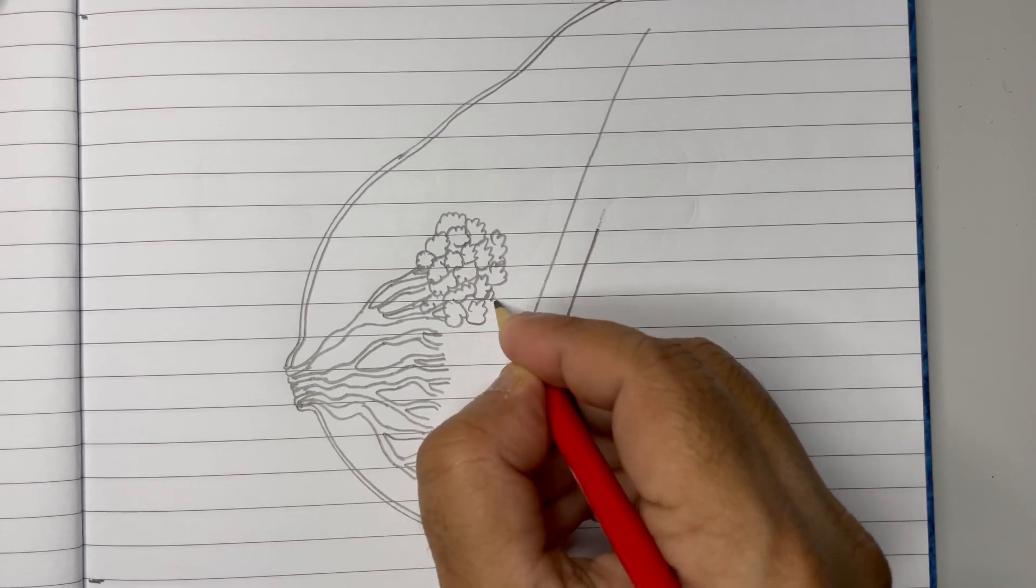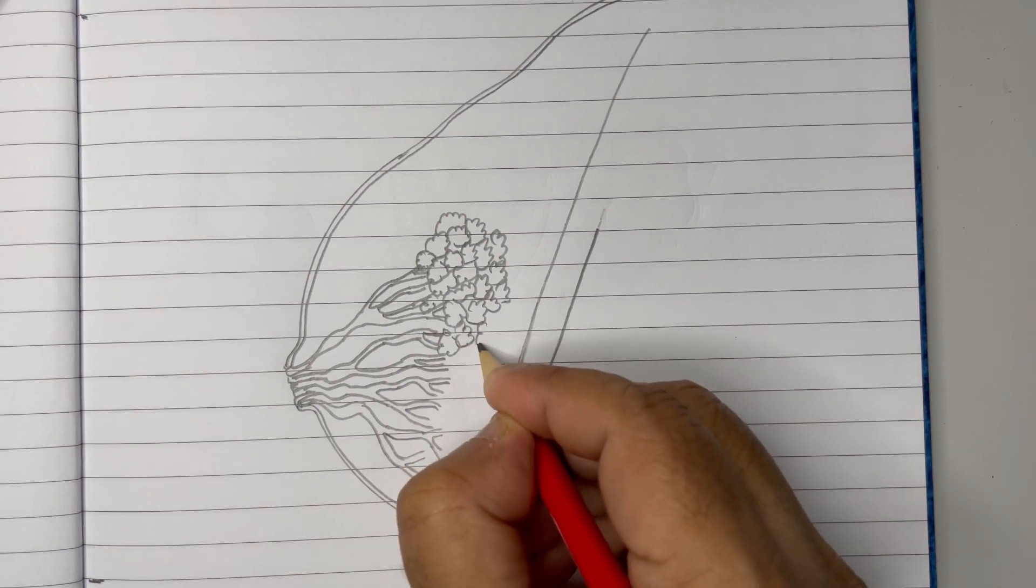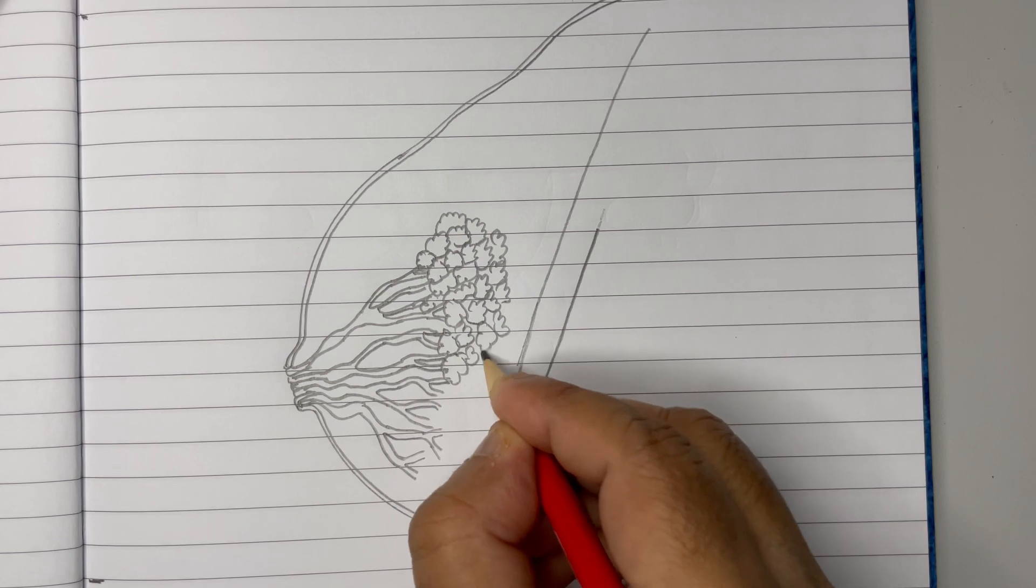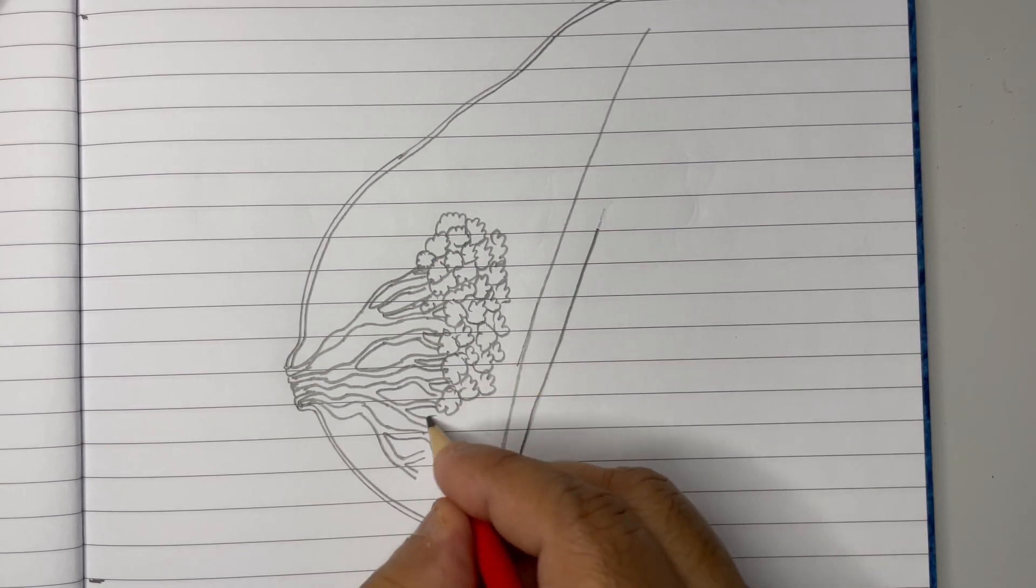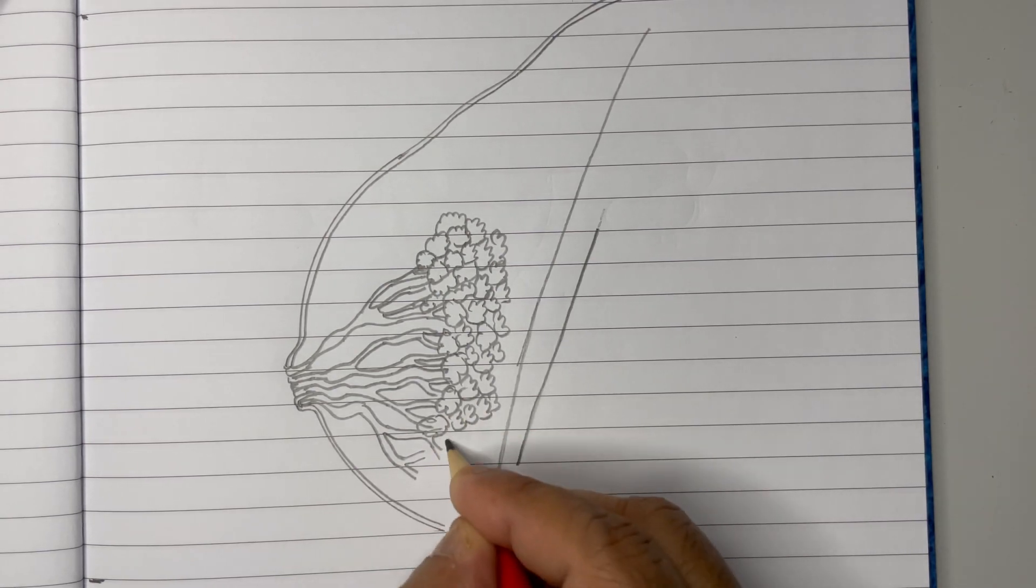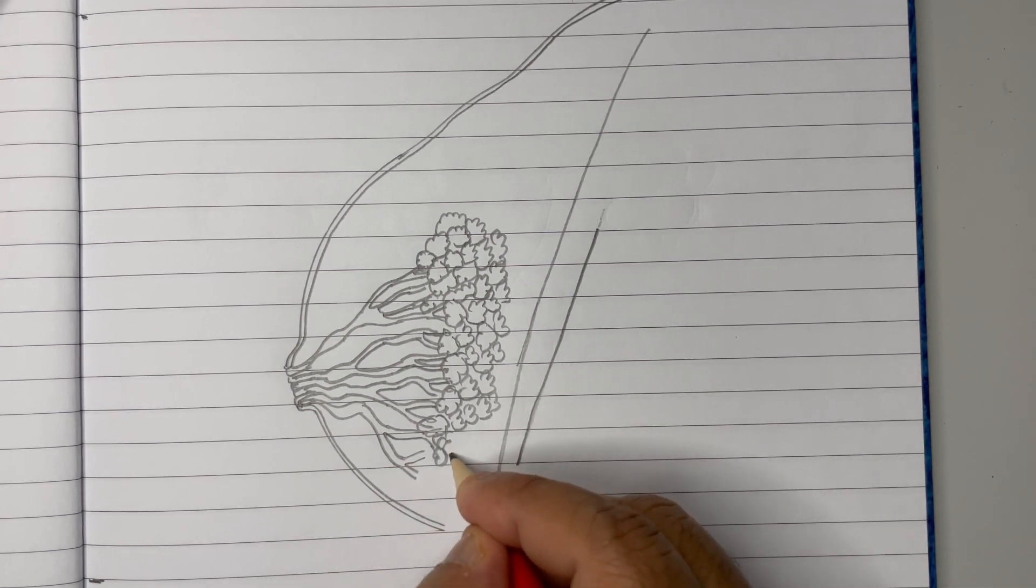From that branch it should go like this. Keep drawing such bunch of grape-like structures. I'm just trying it fast to finish the video quickly, so you can take your time and draw during the exam. Here also, these are the mammary alveoli, so keep drawing.